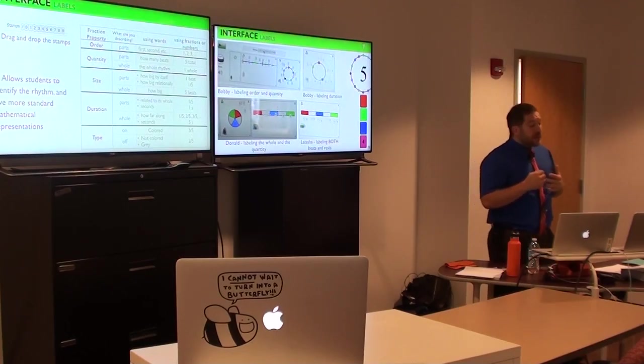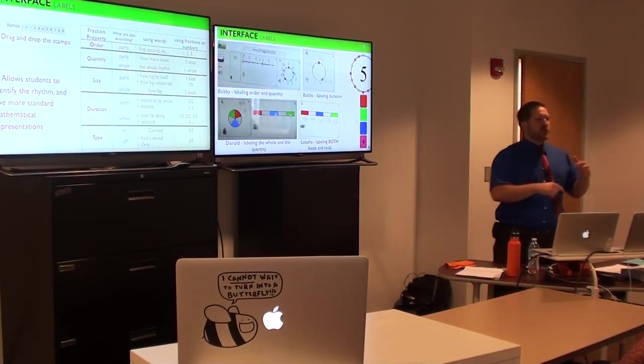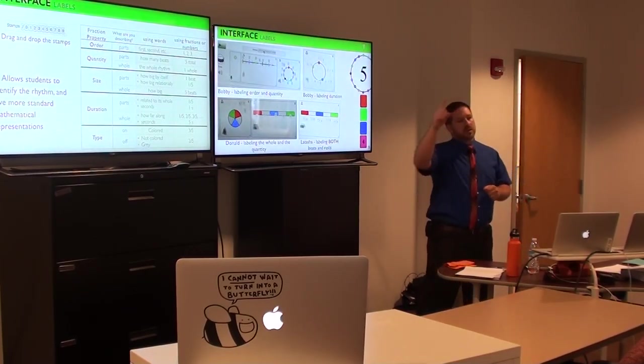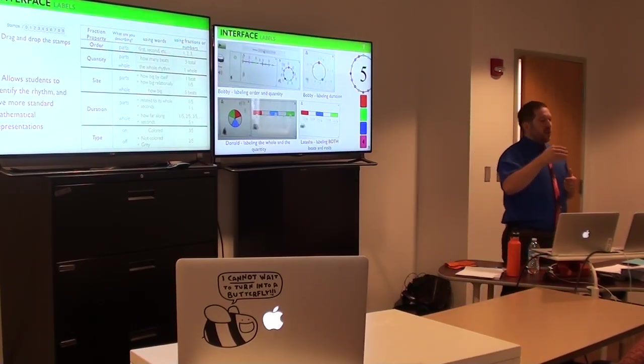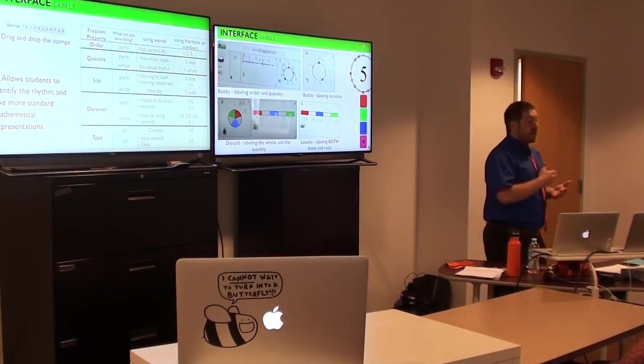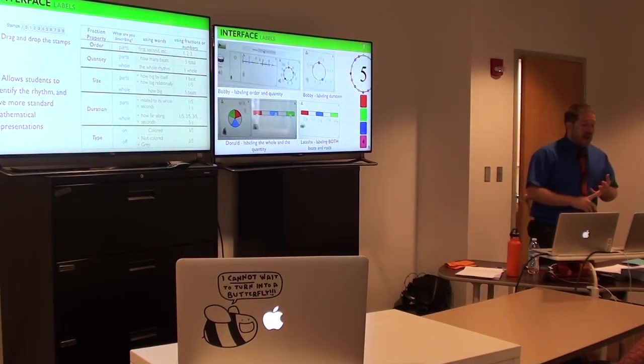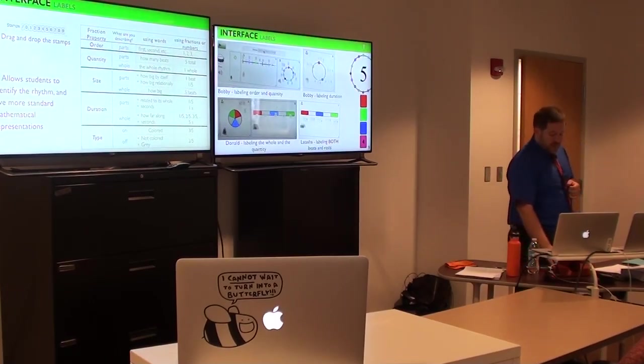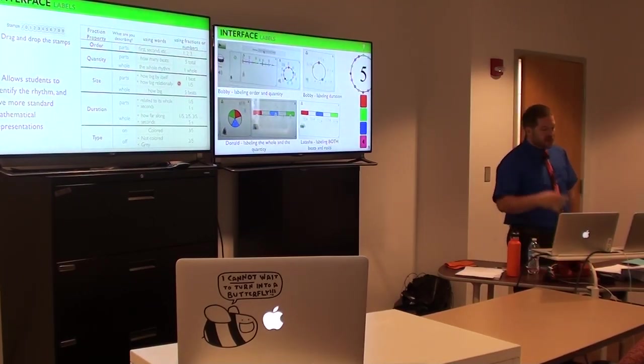And this is really interesting because especially in the first group, they started getting confused because they're like, what were you talking about? What were you talking about? Wait, you were talking about the same thing. And so I had to create this matrix on a whiteboard. And this represents it on the main screen. And so they started to understand that you can describe the order, the quantity, the size, the duration, or the type. And then within each of those, you can describe the parts or the whole. So here, if we wanted to describe the size and the part, they realized they can even describe the parts in two different ways. How big they are by themselves, or how big they are in relation to the whole. So they could label each beat either one, or they could label each beat one-fifth.